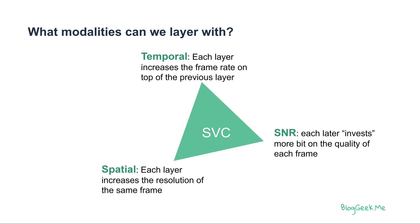What modalities can we layer with in SVC? We can use Temporal Scalability, where each layer increases the frame rate over the previous layer. SNR, Signal to Noise Ratio, where we invest more bits in the quality of each and every frame. Or Spatial, where each layer can increase the resolution of the same frame from the previous layers.